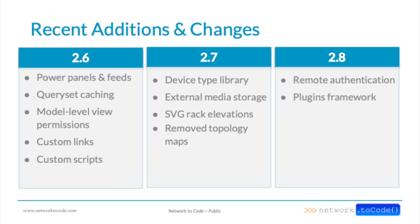Version 2.7 also introduced external media storage — whereas previous releases required storing uploaded media such as image attachments on local disk, we now support a number of cloud services and remote file storage systems. SVG rack elevations was a community contribution that replaced old legacy CSS-based rendering, with racks now rendered directly as SVG images. We also removed the topology maps feature — it had become too large to maintain within NetBox core, and was deferred to a plugin introduced in 2.8.